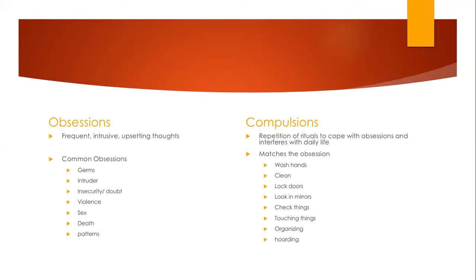The compulsions are not necessarily pleasurable to the individual, and they may have a good understanding that it may be odd or strange or might not make realistic sense. Compulsions generally match the obsession - for example, if someone has obsessive thoughts about germs, the compulsion would be to frequently clean or wash their hands. If they have obsessive thoughts about an intruder, they may often lock their doors. If they have obsessive thoughts about insecurities or body image, they may look in the mirror often. If they have obsessive thoughts about patterns, they may organize a lot.